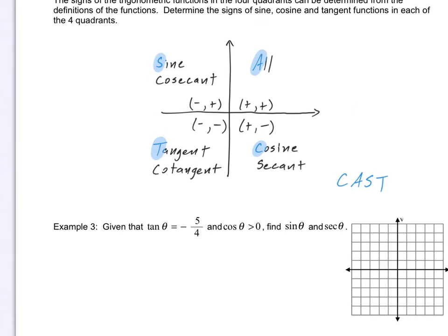In quadrant one, I'm saying all trig functions are positive in that quadrant. So if the angle is in quadrant one, all six trig functions are positive. If the angle is in quadrant two, the only trig functions that are positive are sine and cosecant.